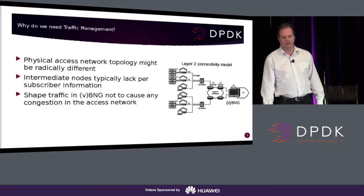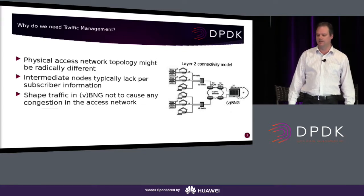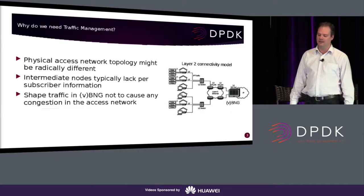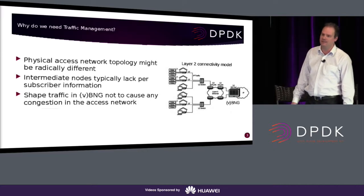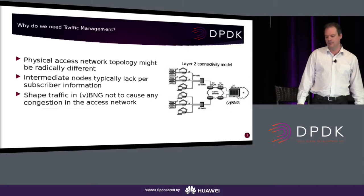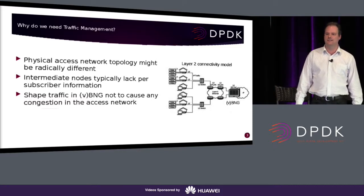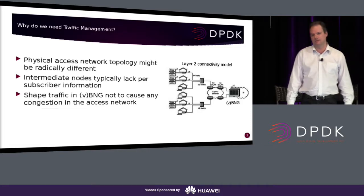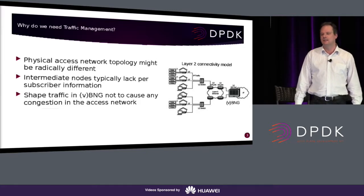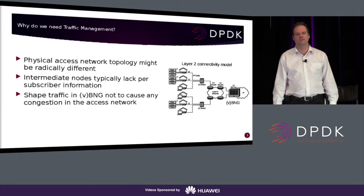What is traffic management and why do we need it? In the figure on the right-hand side, you can see a typical layer-2 access network. It's modeled like a tree topology, but in reality this is not a tree. On the root of the tree we have this virtual or physical BNG — also called BRAS — which authenticates fixed subscribers, terminates the layer-2 access solution, and also does traffic management. The reason is that whatever bottlenecks we have in the access network, those nodes are most probably not programmed to handle subscriber-level queuing. So the solution is to shape traffic in the BNG such that it won't cause any congestion in the network — no drops in the access network, everything is under control.